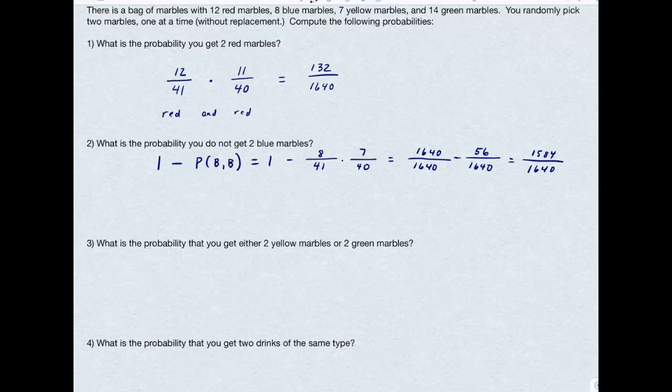Because the problem is, what you might be tempted to do is something like this. Well, I know if I have 41 marbles, if I take my 12 red ones, my 7 yellow ones, and my 14 green ones, that's 33 marbles that are not blue. I could say, okay, I'm going to pick one that's not blue, and a second that is not blue. And the trouble is, that doesn't look like what I got the first time.